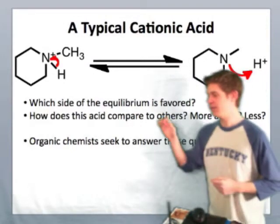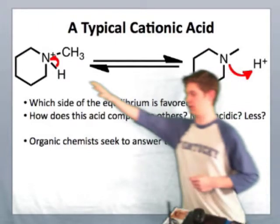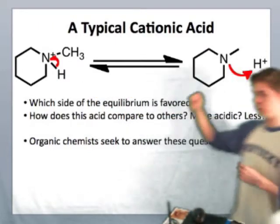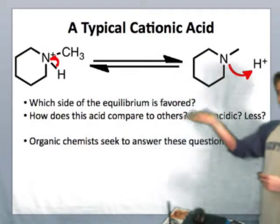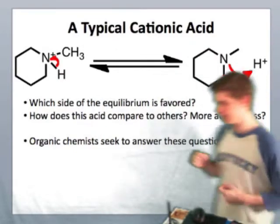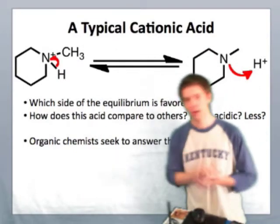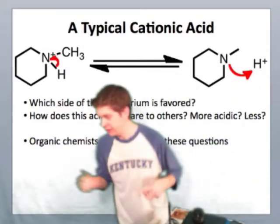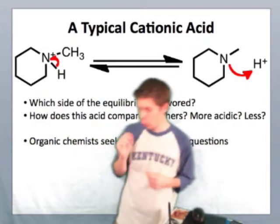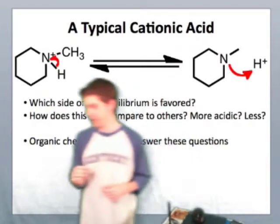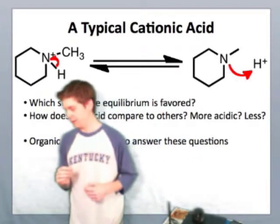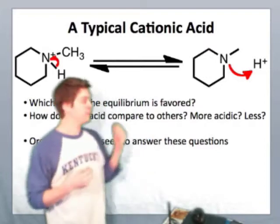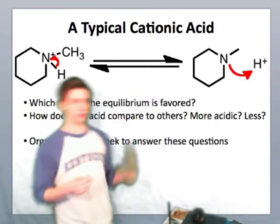It can give up a proton through this red curved arrow here to produce the neutral nitrogen compound that you see here. Now we can ask the question: for this equilibrium shown above, which side is favored, and how acidic is this positively charged nitrogen?